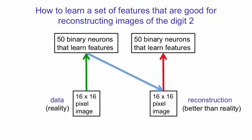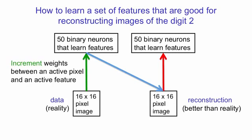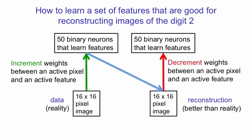It then reactivates the binary feature detectors using the reconstruction to activate them rather than the data. The weights are changed by incrementing the weights between an active pixel and an active feature detector when the network is looking at data, and that will lower the energy of the global configuration of the data and whatever hidden pattern went with it. And it decrements the weights between an active pixel and an active feature detector when it's looking at a reconstruction, and that will raise the energy of the reconstruction.